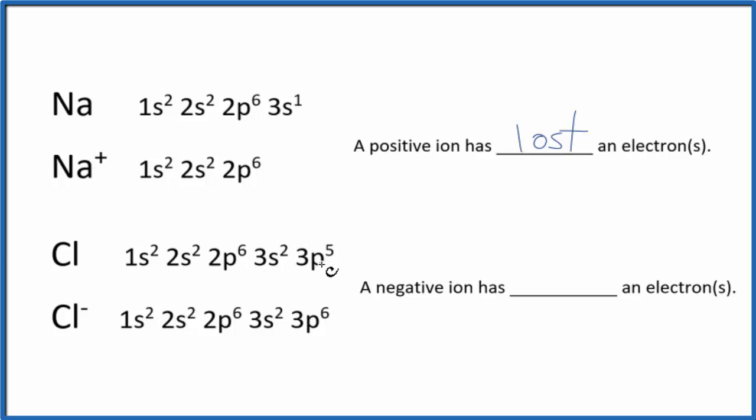Here for chlorine, we had 3p5, but now we have 3p6, so we've gained an electron. Think of it this way: electrons are negative, so if you gain electrons you get a negative charge, you become an anion.